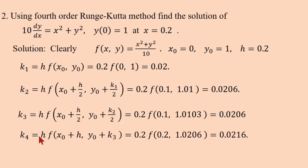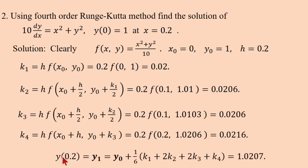For k4: h·f(x₀ + h, y₀ + k3) = 0.2·(0.2² + 1.0206²)/10 = 0.0216. After calculating k1, k2, k3, k4, substitute into y₁ = y₀ + (1/6)(k1 + 2k2 + 2k3 + k4). We get y(0.2) = 1.0207.